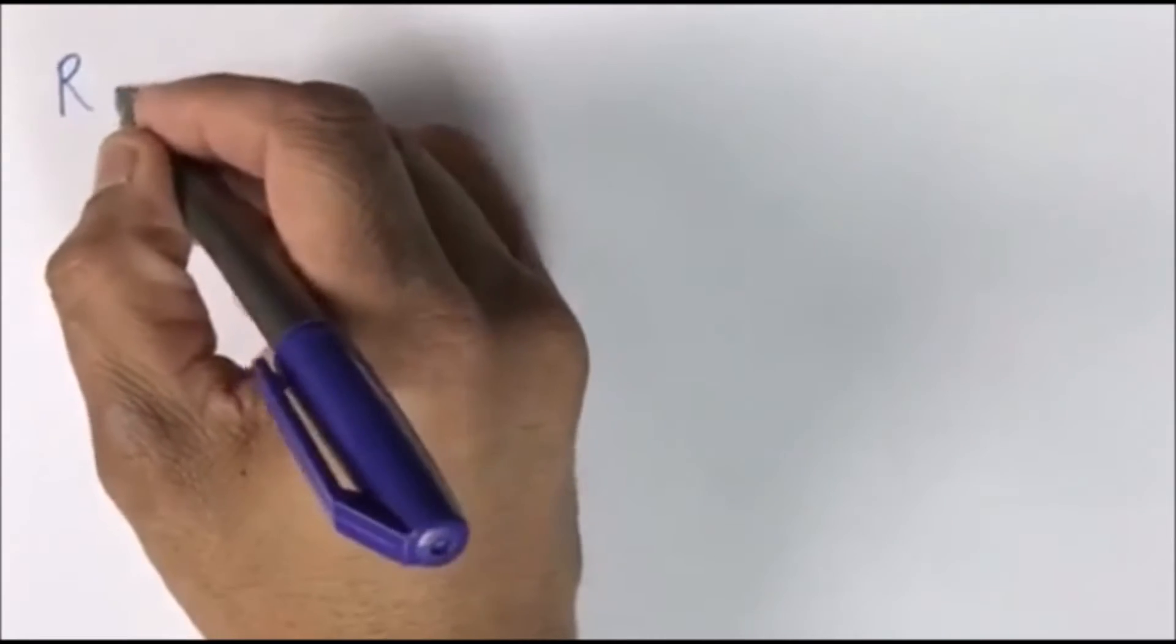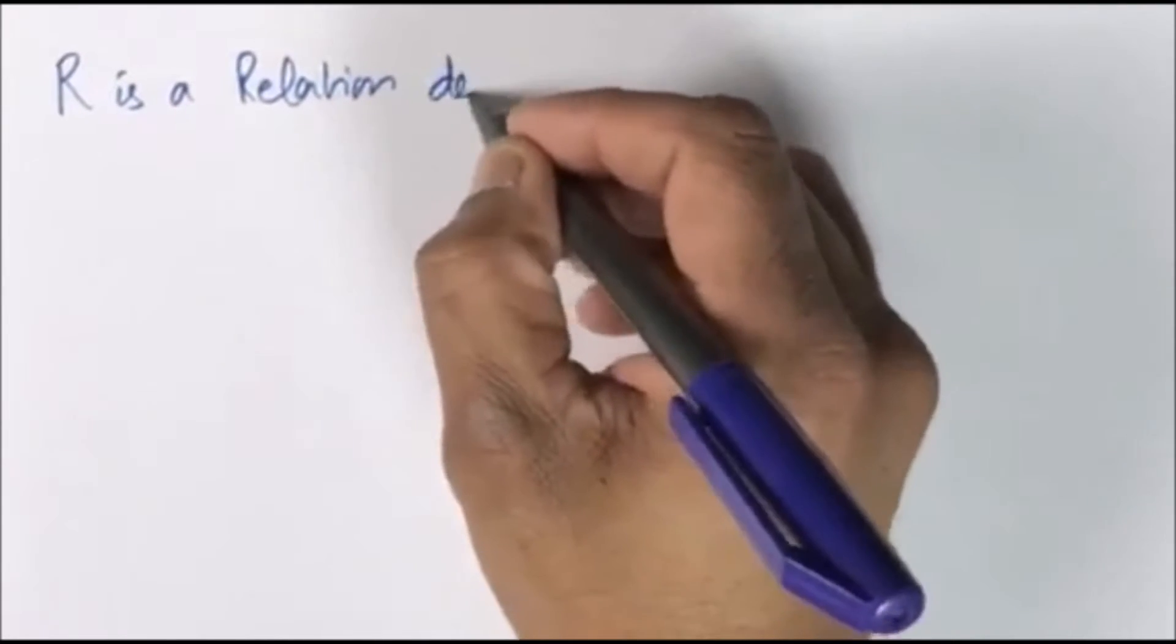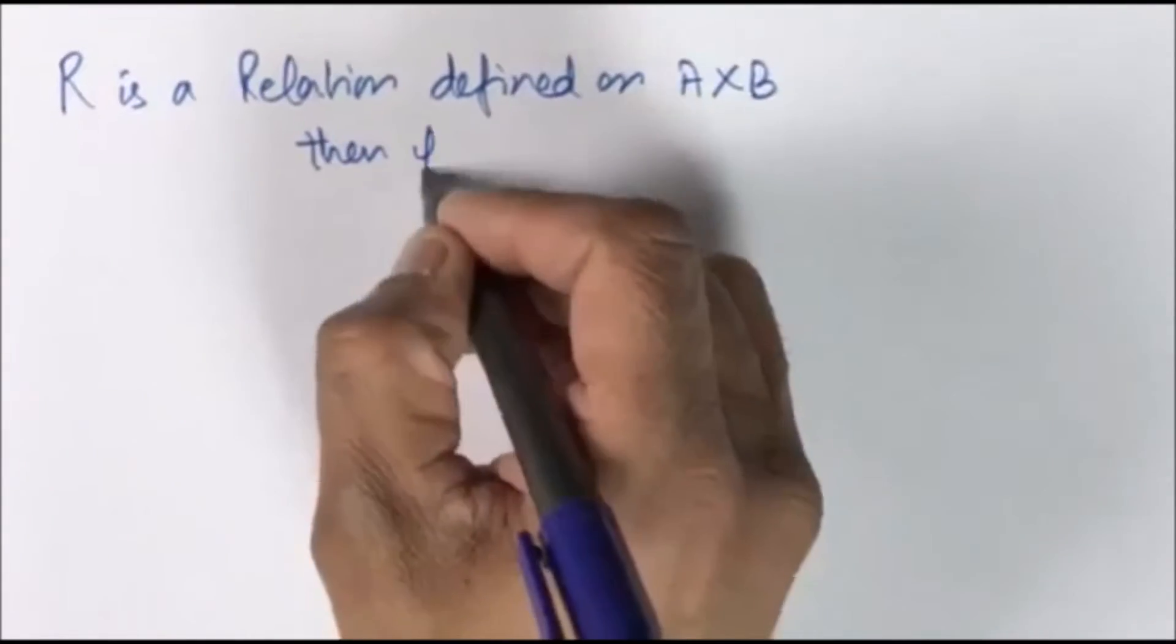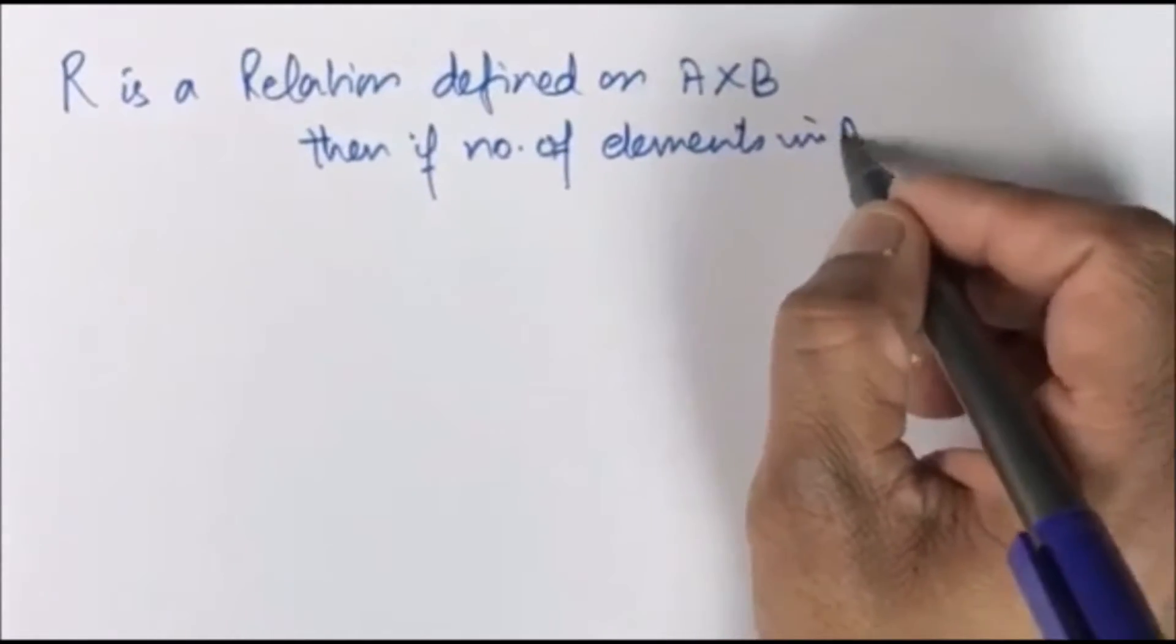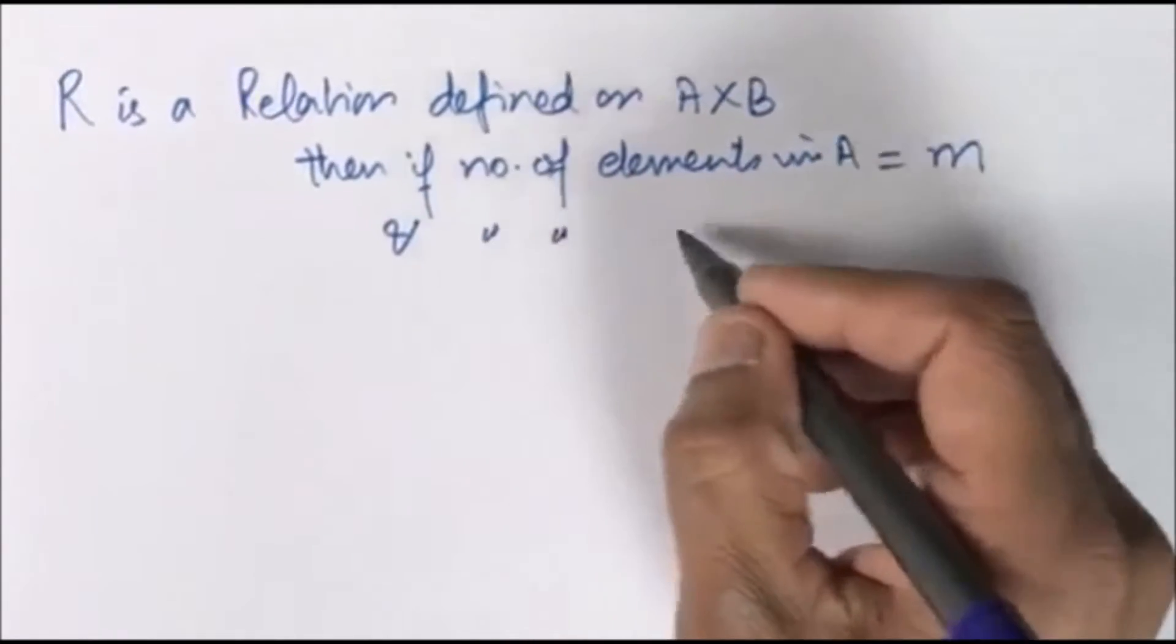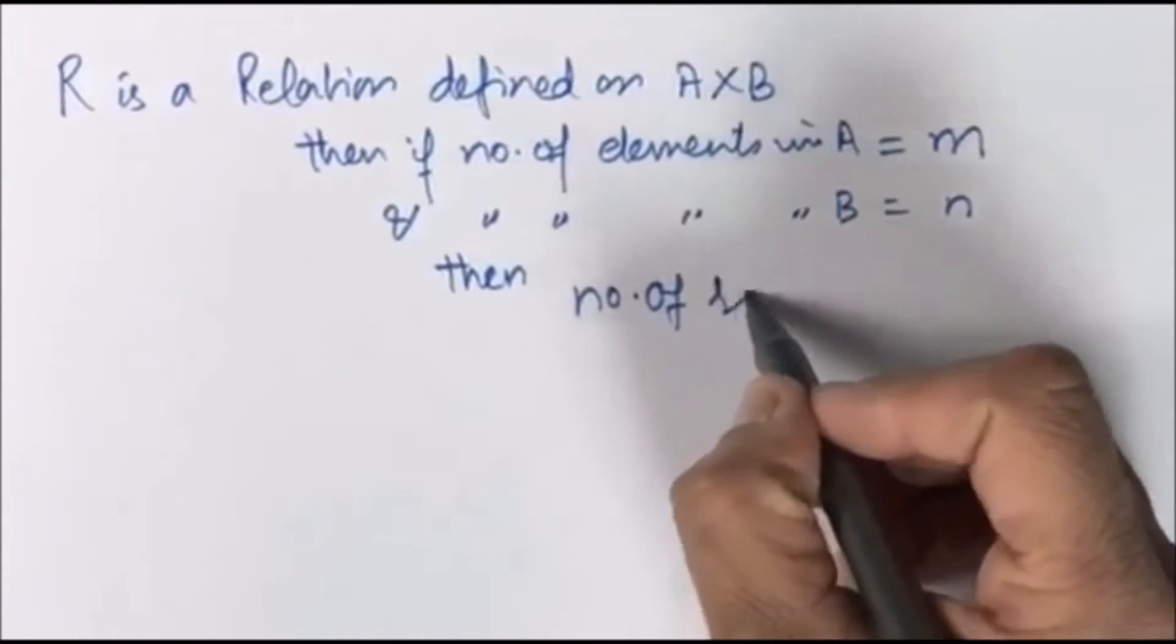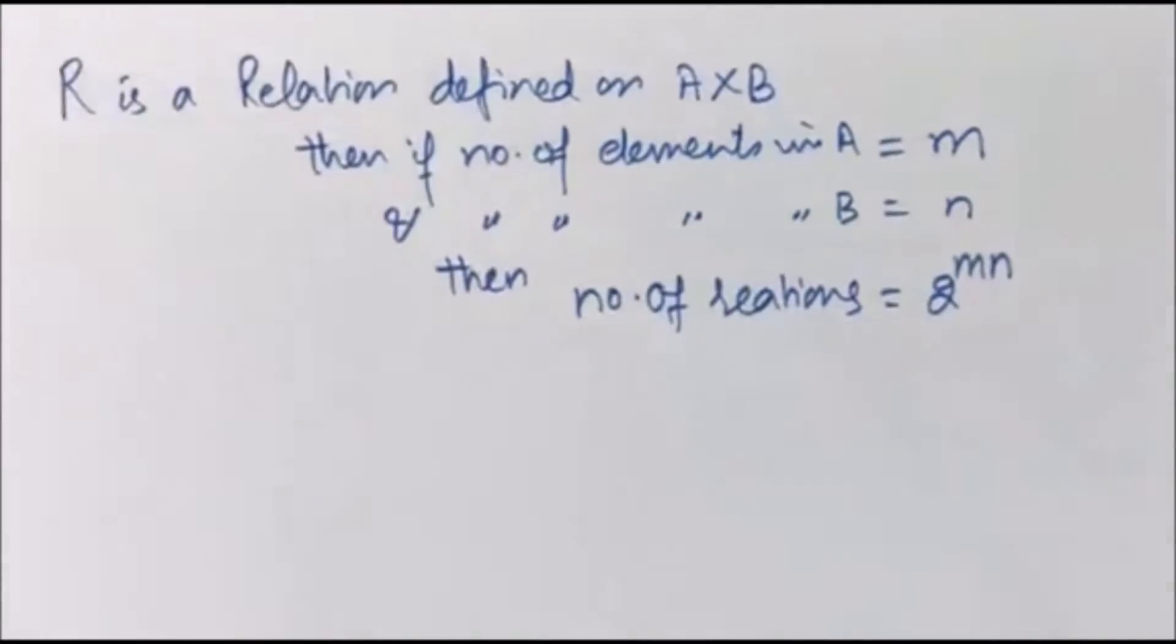If R is a relation defined on A cross B, then if number of elements in A equals M and number of elements in B equals N, then number of relations is equal to 2 raised to power MN, that is number of subsets.